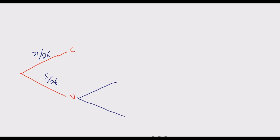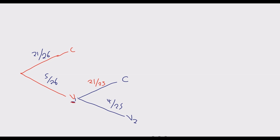For the second selection: if the first card was a vowel and we did not replace it, there are now 4 vowels remaining out of 25 cards. The number of consonants is unchanged at 21 out of 25. Adding these two fractions gives 1, which confirms the principle of probability.